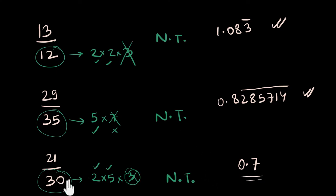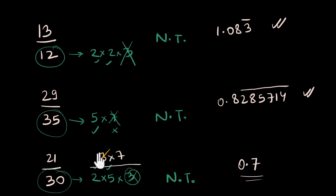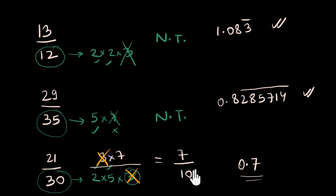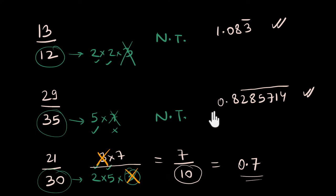Did you see it? For 21 by 30, we saw a 2, 5, and 3 in the denominator — the 3 was a problem. But we were only looking at the denominator. If we also look at the numerator, 21 factors as 3 times 7. That 3 in the numerator cancels with the 3 in the denominator! So the fraction simplifies to 7 by 10, and 10 in the denominator always gives a terminating decimal. We must simplify the fraction first before checking.